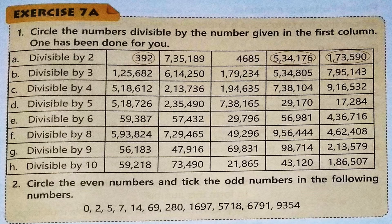Now let's do the exercise. We need to circle the numbers divisible by the number given in the first column. For divisibility by 2, we just look at the last digit — if it is 0, 2, 4, 6, or 8, the number is divisible by 2. So we circle the numbers ending in those digits and leave the others.